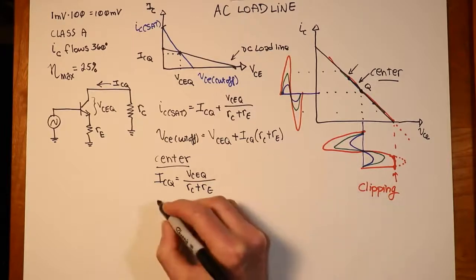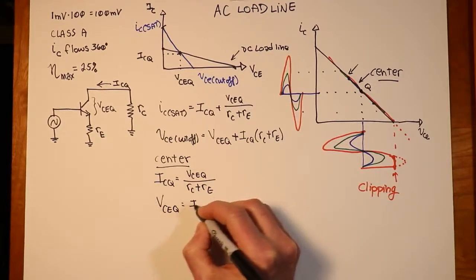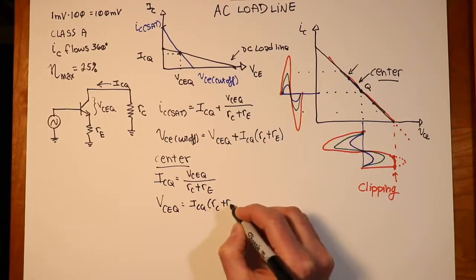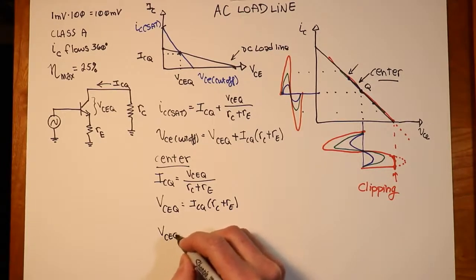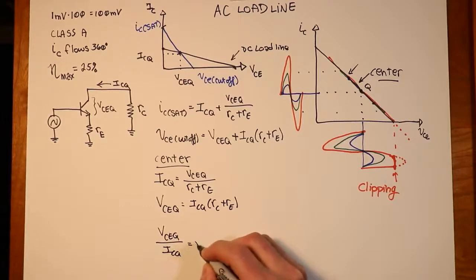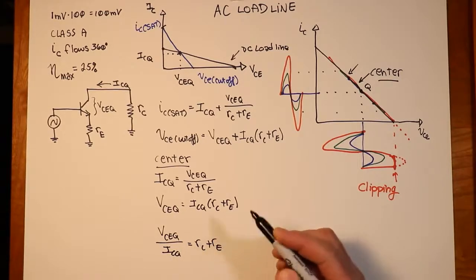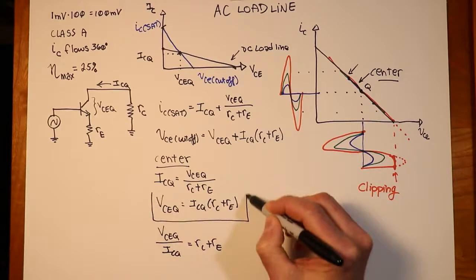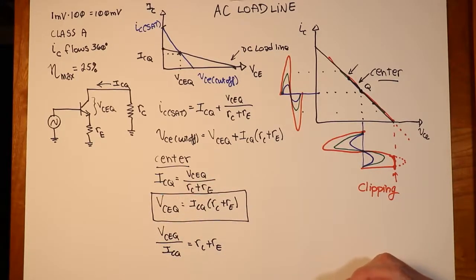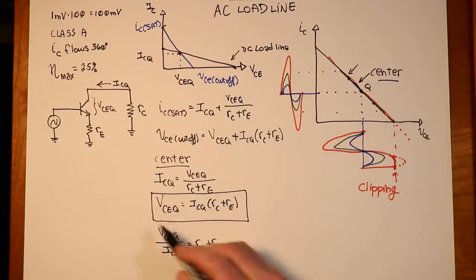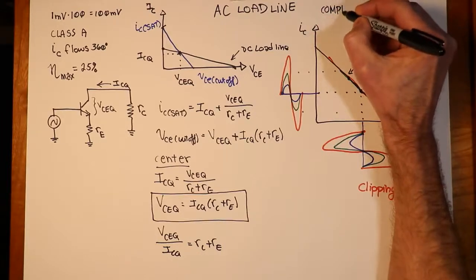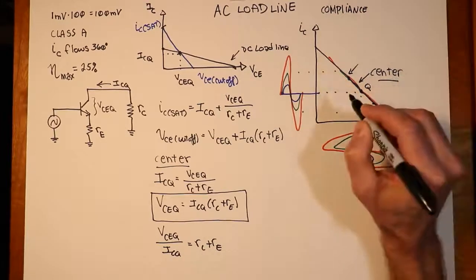Or if you prefer, you can look at it this way and say VCEQ would have to equal ICQ times the quantity RC plus RE. Or you could even look at it as sort of a resistive relationship. You could say that VCEQ over ICQ would have to equal RC plus RE. Of these three, I think this middle one is the most useful, as you will see. It's the most practical thing that we have to look at. Basically, what this tells us is that if we have a centered Q point, I can use the VCEQ as my peak signal swing. Now, we call that the compliance of the amplifier.